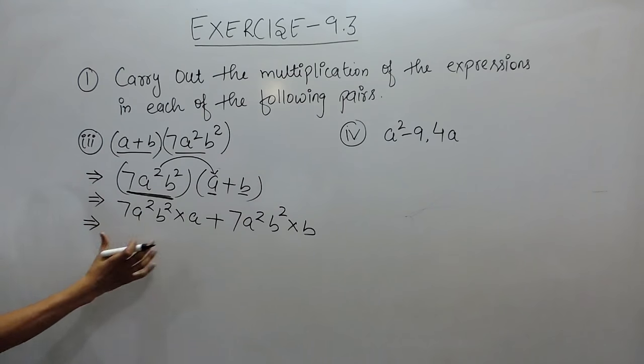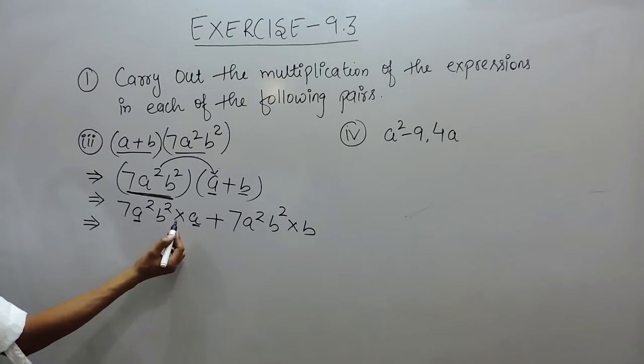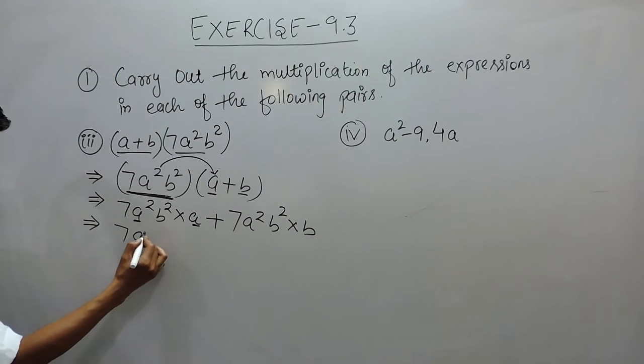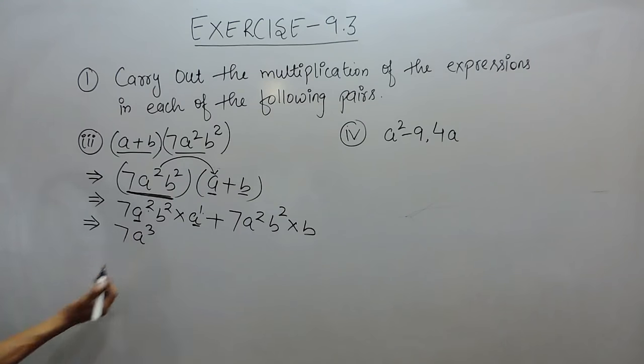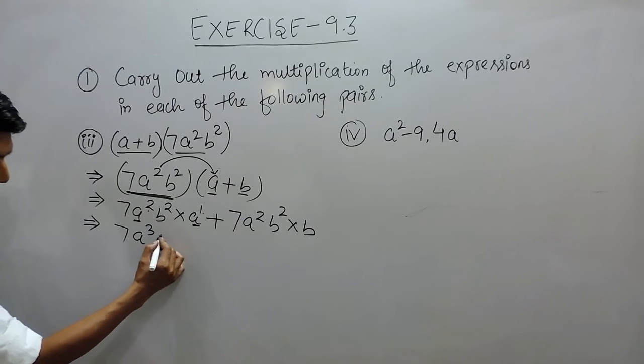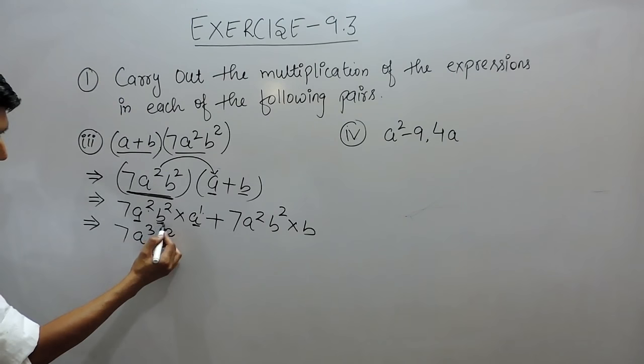So first of all, solve this term first. Here these two are like terms, so when they are multiplied, their power should be added. There is only one constant term, and when a² is multiplied by a, their power should be added, so this will become a³. And b² will remain as it is because there is no b to multiply or solve with this b².